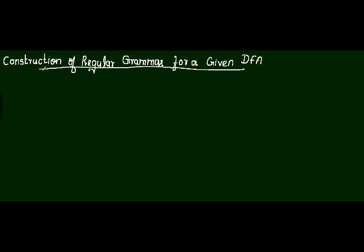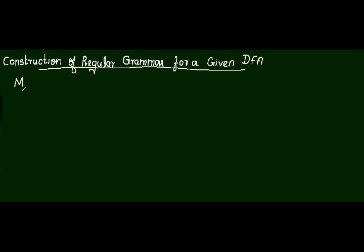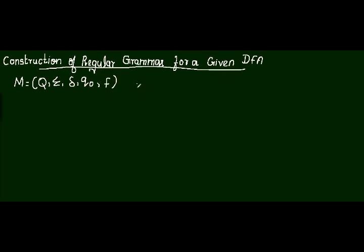In this lecture, I am going to explain how to construct regular grammar for a DFA. First, let me explain the steps. In DFA, there are five tuples. Suppose machine M is a DFA — it consists of five tuples: Q, Sigma, Transition, Q0, and F.